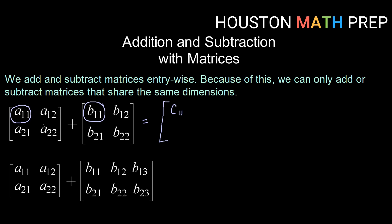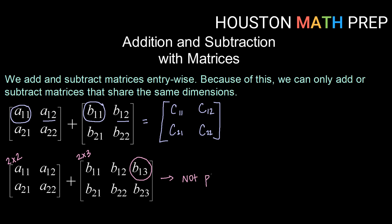We then do that for each entry. So we would take A12 plus B12 and that would give us C12, and so on, until we had done every entry in our matrix. Because this is the way that we add and subtract matrices, we can only add and subtract matrices that share the same dimensions. If we try to add a two by two matrix with a two by three matrix, when we got to entry B13 — the entry in row one, column three of the second matrix — there is no entry from the first matrix to add with it. Therefore, this addition is not possible.